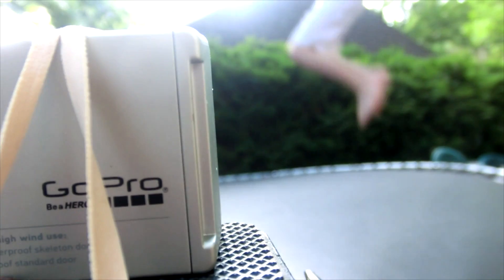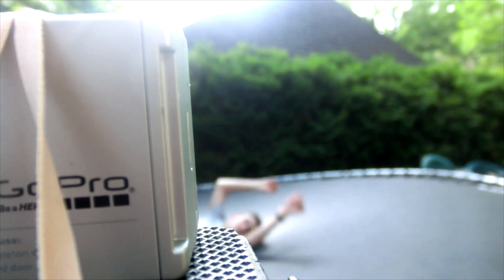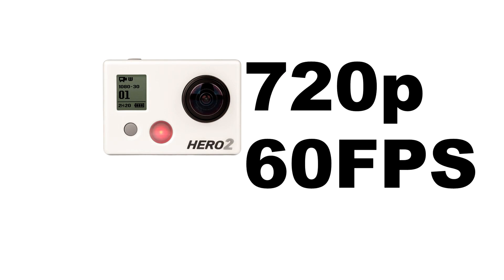The first step is to record your video in any quality or any FPS. You can use a normal camera for this. I will record my slow motion video with my GoPro Hero 2. I will record on 720p with 60 frames per second.